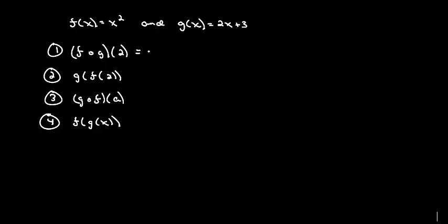This is defined or is equivalent to saying f of g of 2. So we take 2, plug it into g first, which we get 7 out, so now we're looking at f of 7, and f of 7 is 49.